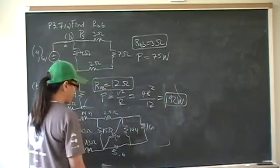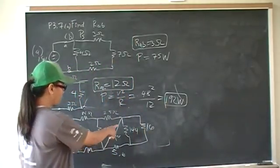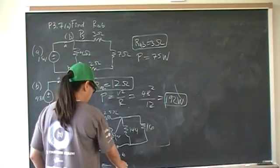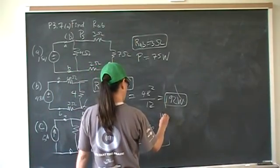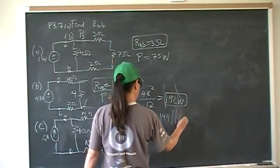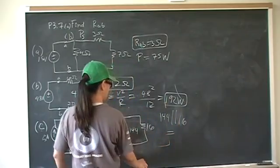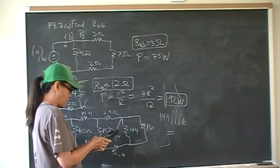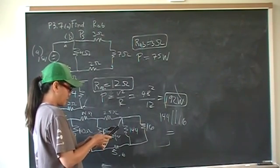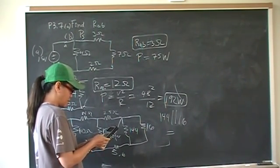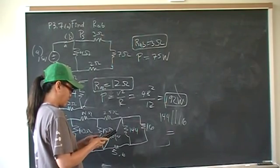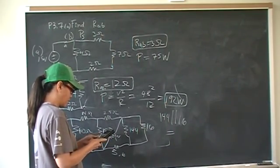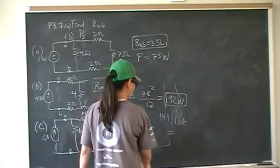So now we have 144 in parallel with 16. So that's 1 divided by 1 divided by 144 plus 1 divided by 16.